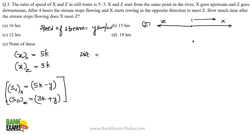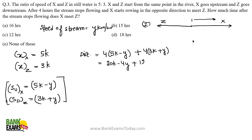After 4 hours, the total distance between X and Z is 32k. The stream stops, so y = 0. X starts rowing in the opposite direction to meet Z. The distance between them at that moment is 32k.